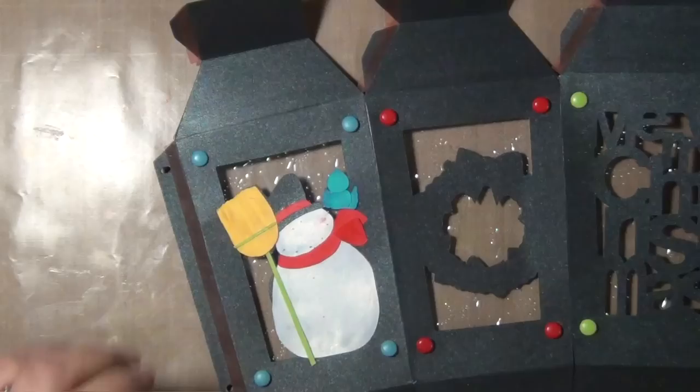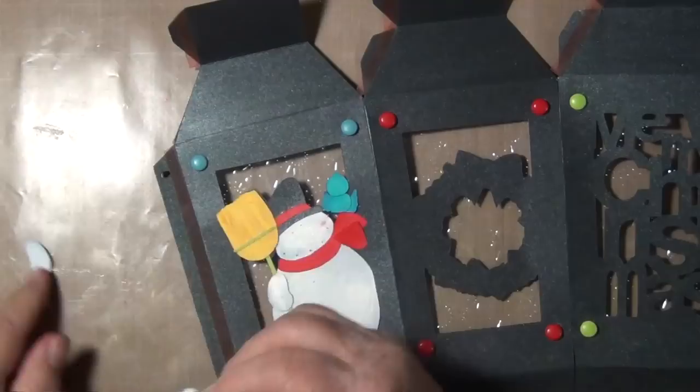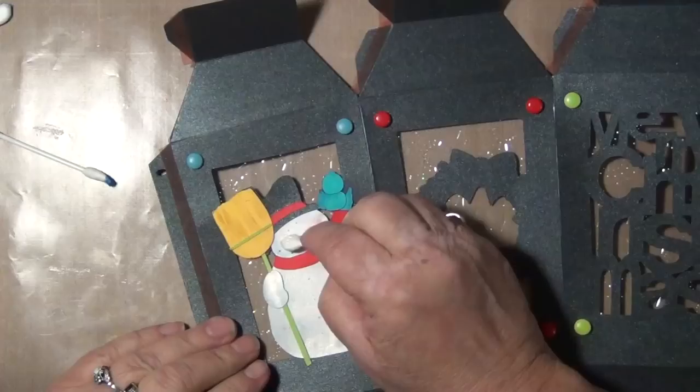Next will come the scarf, the scarf trim, and then the bird with the bird wings, then the bird body, then the bird head. And then last will come the arms of the snowman.